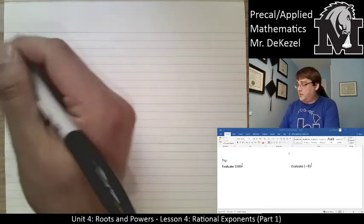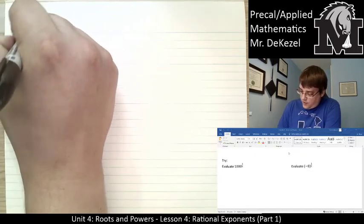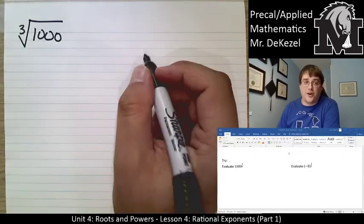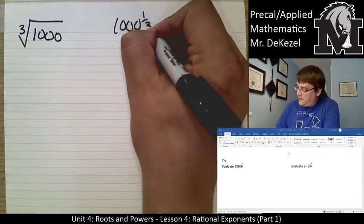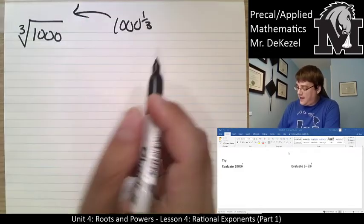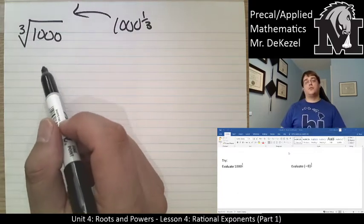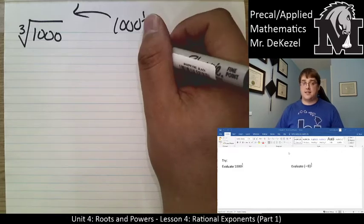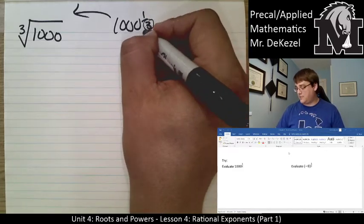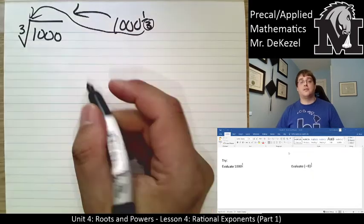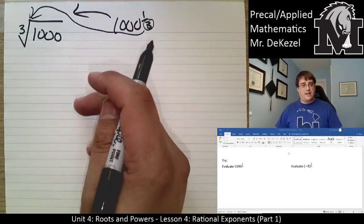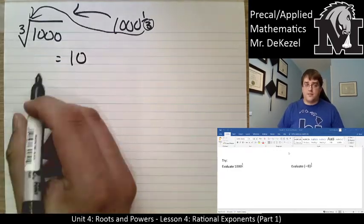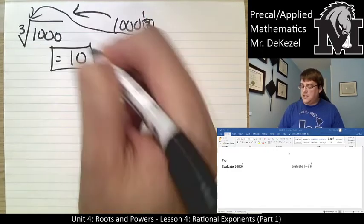We have 1000 to the power of a third. We know right away that we can write that as the third root of 1000, because the three on the bottom is the index that goes in our radical. I know that 10 times 10 times 10 gets me a thousand, so the third root of a thousand is 10.